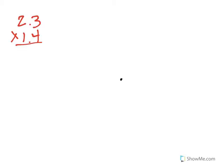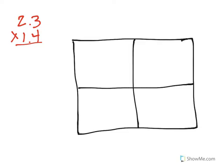So we are going to solve the problem 2.3 times 1.4 using an area model. The first step is to draw my area model. So I have set up my area model. I have two boxes going across because that represents 2.3, and then I have two boxes going down which represents 1.4.